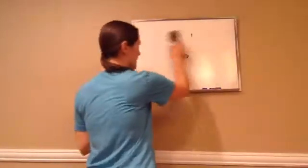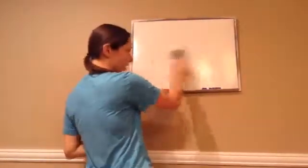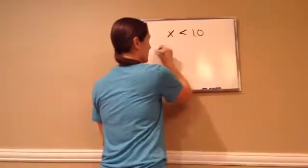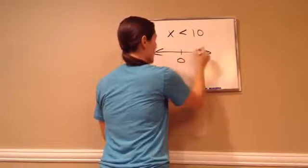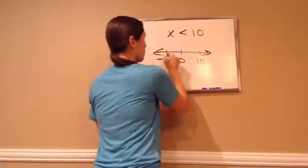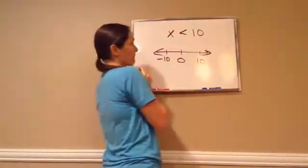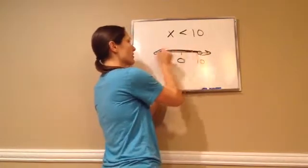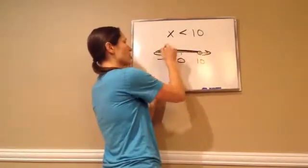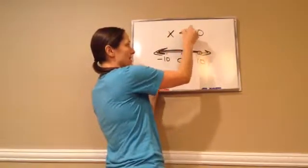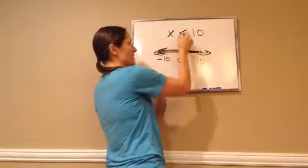All right, Algebra 1, Lesson 46. This one is on conjunctions. Let me do a quick review. If I were to say x is less than 10 on my number line, what would I do? Put an open circle by 10 and draw it left. Okay, very good. He's exactly right. So we're showing x, the amount, whatever I draw is less than 10. So x is less than 10.